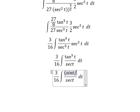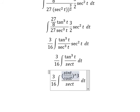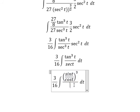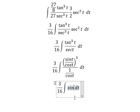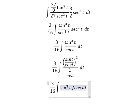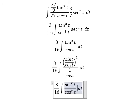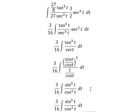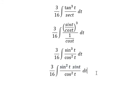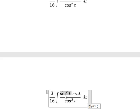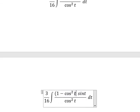We have secant of t to the power of 3, which equals 1 over cos t to the power of 3. Simplifying, we get secant of t to the power of 3 over cos t squared. We can write this as sin t squared multiplied by sin t. Then sin t squared is changed to 1 minus cos t squared — this is a trigonometric identity.